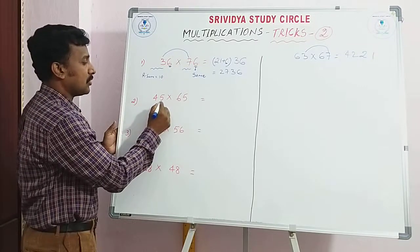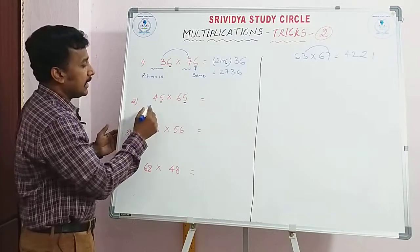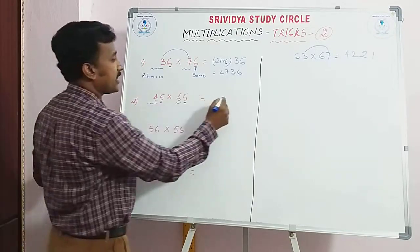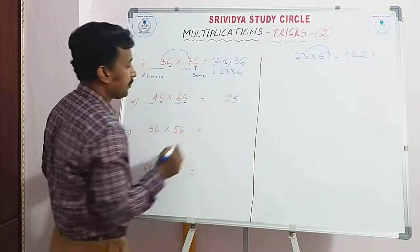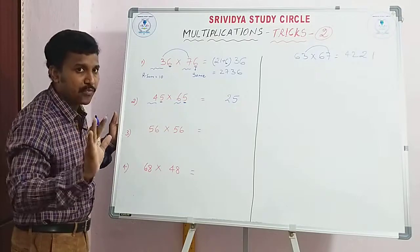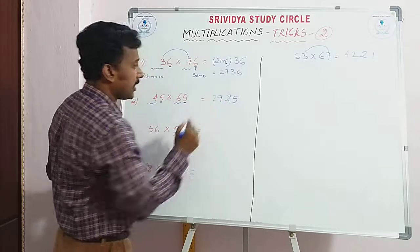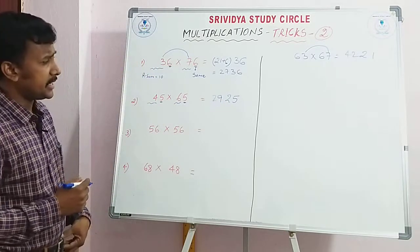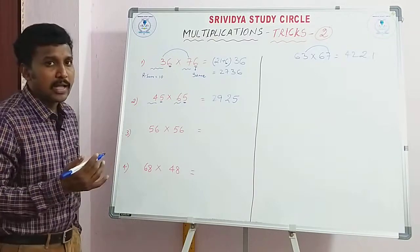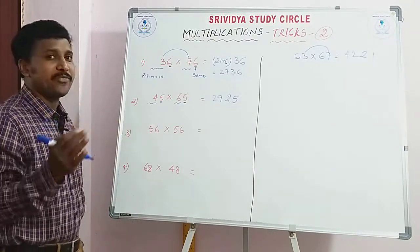Here, first observe. Units digits same. Remaining digits sum same. 4 plus 6, 10 — apply condition. 5, 5, 25. And 4, 6: 4 into 6, 24. Plus 5: 24 plus 5 is 29. Answer is 2925. If you habituate to this method, you can do it in a fraction of seconds. But do more and more practice.